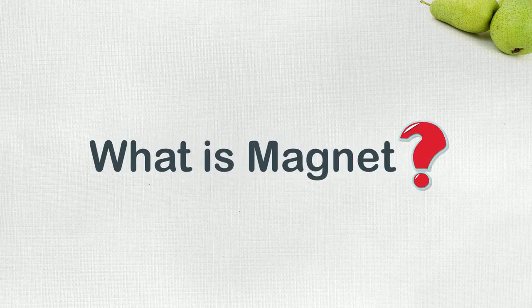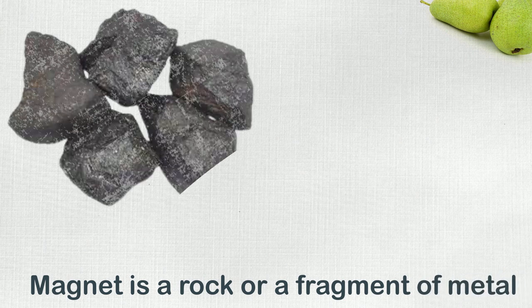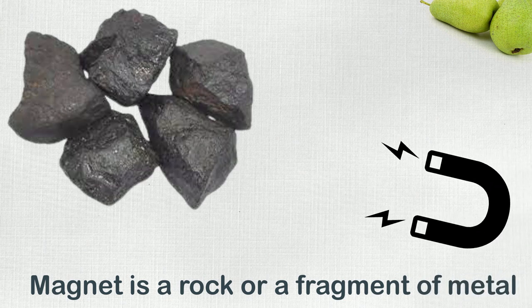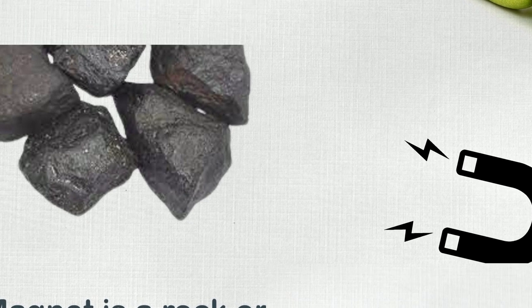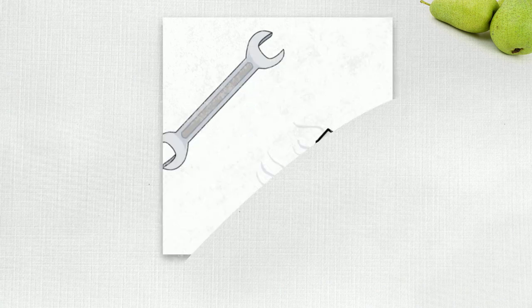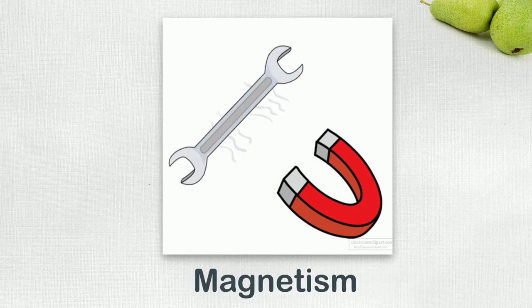What is magnet? Magnet is a rock or a fragment of metal which has the ability to pull some specific types of metals towards itself. The force with which a magnet attracts other objects towards itself is called magnetism.